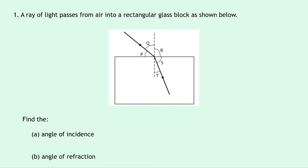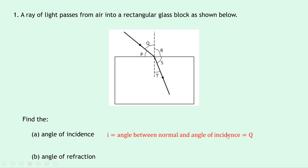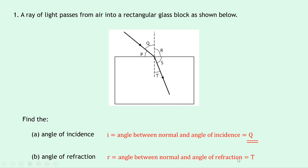We're now going to try 5 worked examples where we practice working out angles of incidence and angles of refraction, and also drawing ray diagrams. Question 1 says a ray of light passes from the air into a rectangular glass block as shown. We've got letters P, Q, R and S, with light coming into the block and changing direction. For part A, the angle of incidence is the angle between the normal and the incident ray, which in this case is Q. For part B, the angle of refraction is the angle between the refracted ray and the normal, which is T.